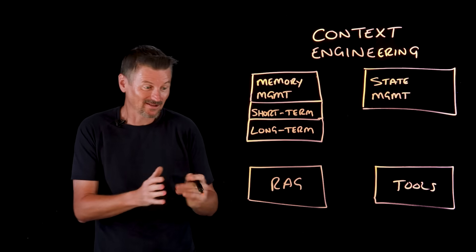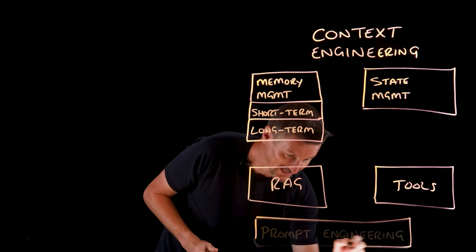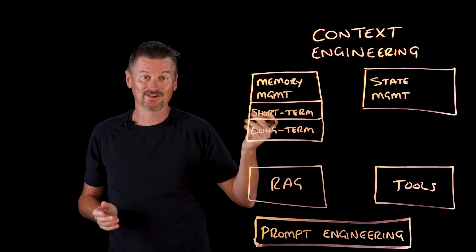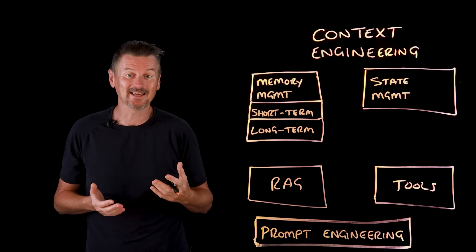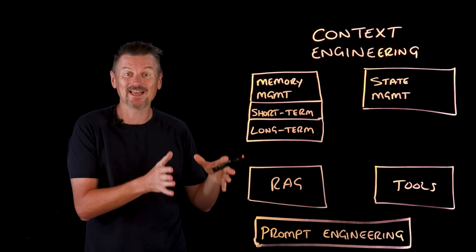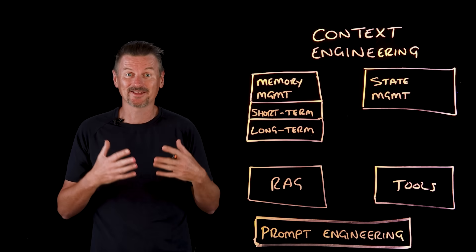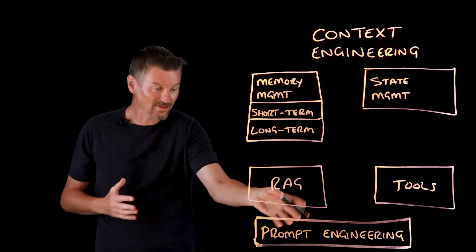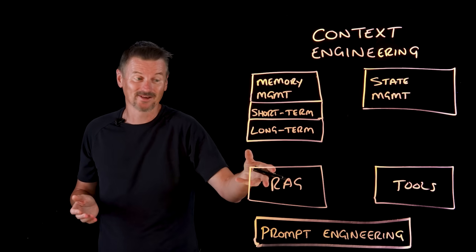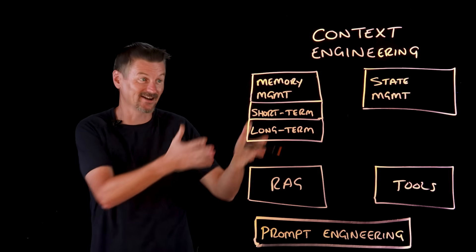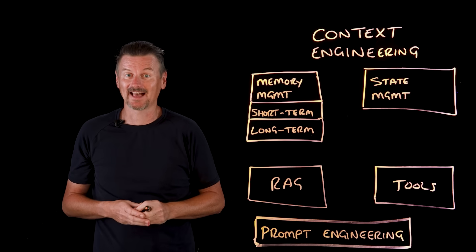Prompt engineering is also part of context engineering. You can take a base written prompt like 'analyze security logs for anomalies,' and then at runtime inject it with current context like recent alerts and known false positives. All those variables get populated from state, memory, and RAG retrievals. That final prompt might be 80% dynamic content and 20% static instructions. So prompt engineering gives you better questions; context engineering gives you better systems when you combine them properly.